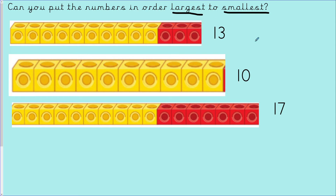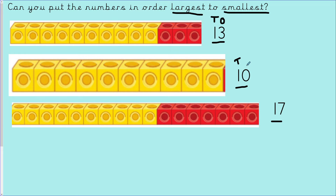This time you are ordering the numbers from largest to smallest, starting with the biggest number first. Please pause the video here and have a go. Our numbers are 13, 10, and 17. In the number 13 I have 1 ten and 3 ones; in the number 10 I have 1 ten and 0 ones; in the number 17 I have 1 ten and 7 ones.